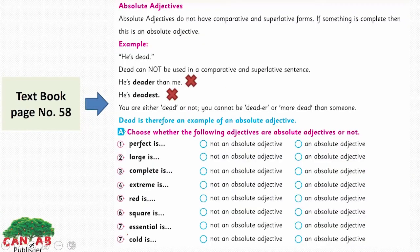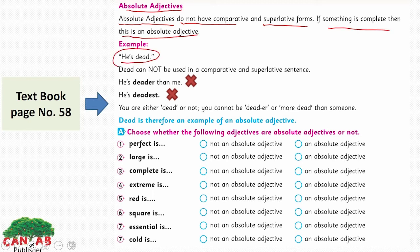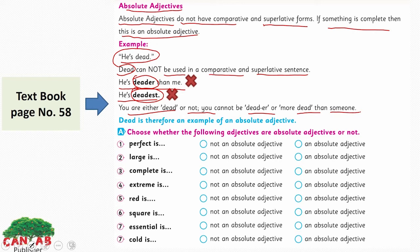Now let's move to page number 58 and discuss absolute adjectives. These are the tricky ones, so you need to be clear on the concept. Absolute adjectives do not have comparative and superlative forms. If something is complete in itself, it is an absolute adjective. For example: 'He is dead.' 'Dead' cannot be used comparatively — you can't say 'he is deader than me' or 'he is deadest' — that is grammatically incorrect. You are either dead or not; you cannot be deader or more dead than someone.